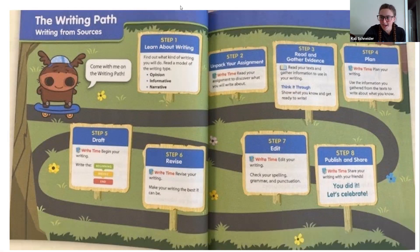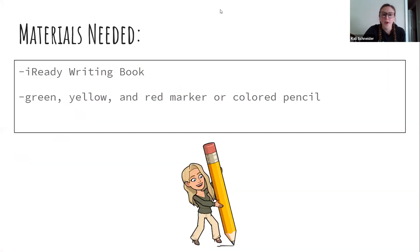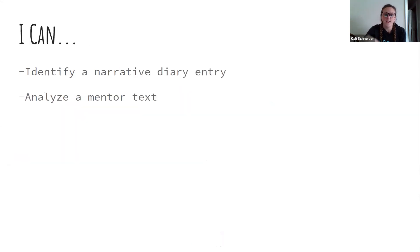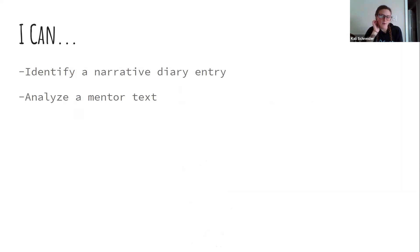We're going to read a mentor text with it. Please make sure you have your iReady book, a green, a yellow, and a red marker, or colored pencil, or crayon, whatever you have to be able to mark up our mentor text to understand it better today. Our objectives are: I can identify a narrative diary entry, and I can analyze a mentor text. That's going to help us a lot. We'll see an example.